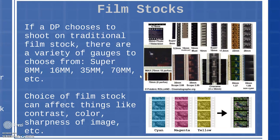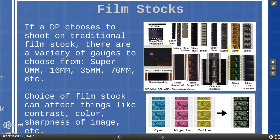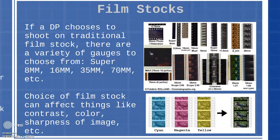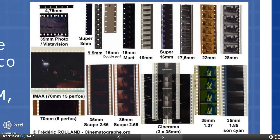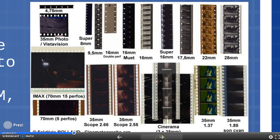Another important thing to keep in mind is that different brands of film stock are known for different qualities. A director might choose Kodak over something else because they like the warmth of Kodak film stocks, as they all have a slightly different chemical makeup. The choice of film stock can affect things like the contrast, the color, the sharpness of the image, etc. This is something a DP would think carefully about because they really want to get a certain effect. Different gauges are shown in this image — you can see the wider gauges for IMAX or widescreen, and Super 8 was used mainly for home movies.